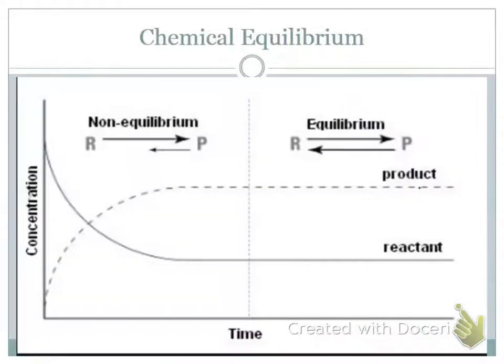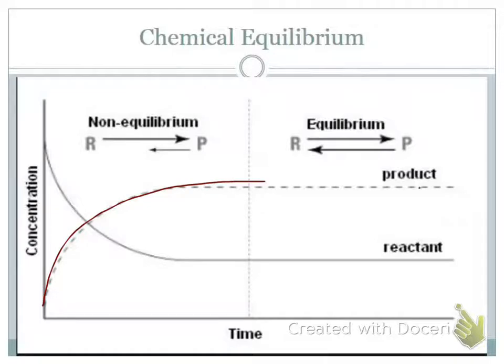So this is what that looks like on a graph. In the beginning of a reaction going from reactants to products, the product concentration is increasing because I'm making products.